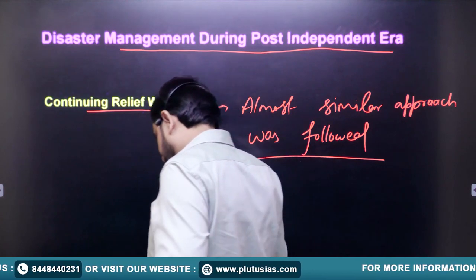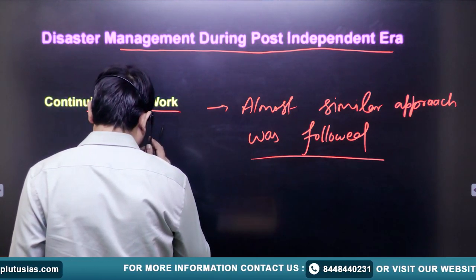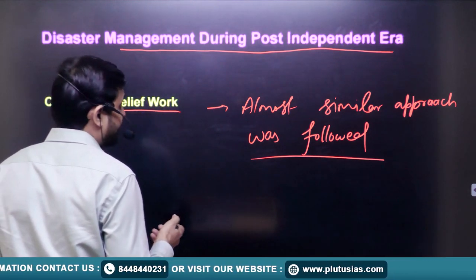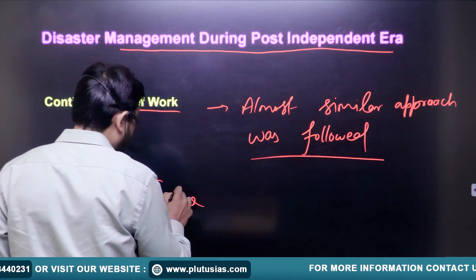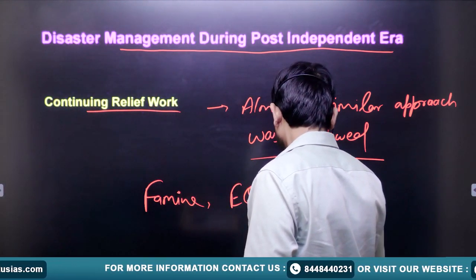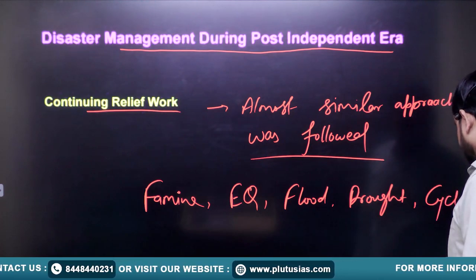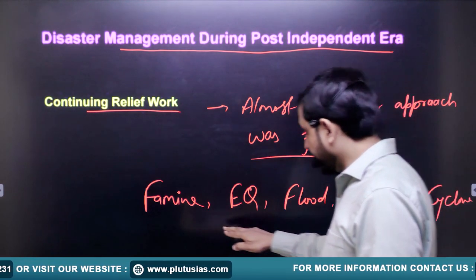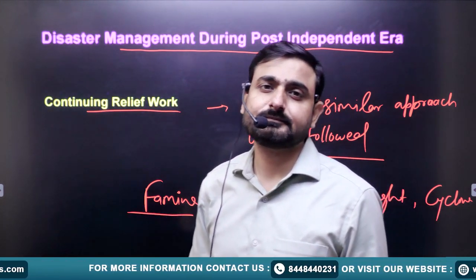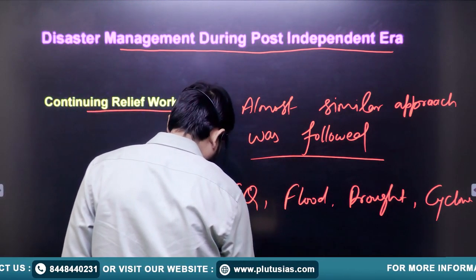Even during and after the colonial time period, certain disasters were known for great casualties — such as famine, earthquake, flood, drought, and cyclone. During 1943, there were great casualties in the Bengal famine. The colonial government at that time started a food-for-work program.